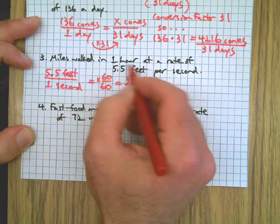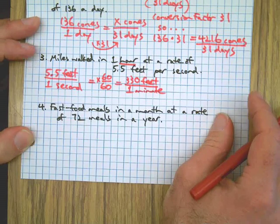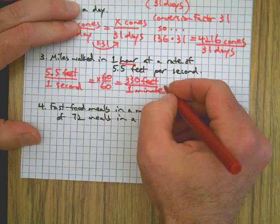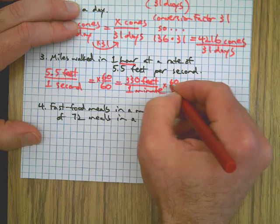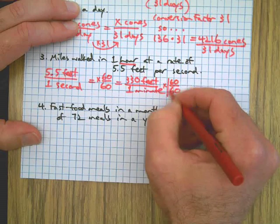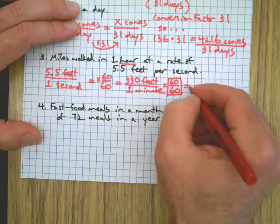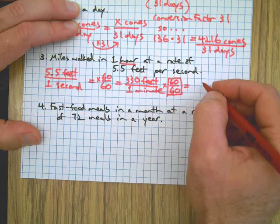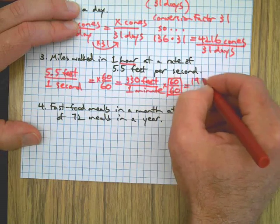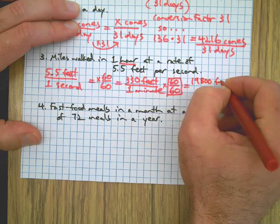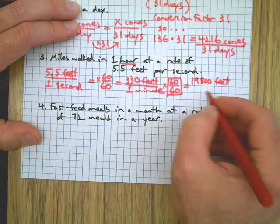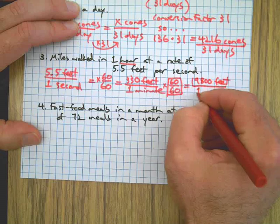We're looking for hours, though. I'm going to need to convert one more time, right? I'm going to multiply by one. Why do I call it one? Because 60 over 60 is one. This will change minutes to hours, and it will give us 19,800 feet in one hour.